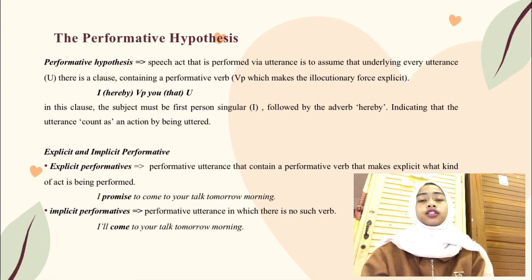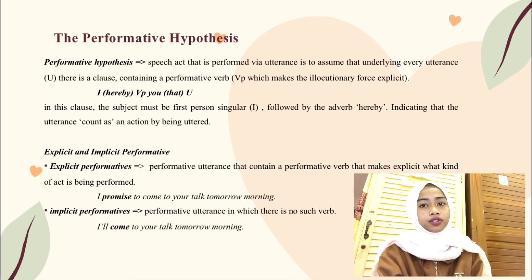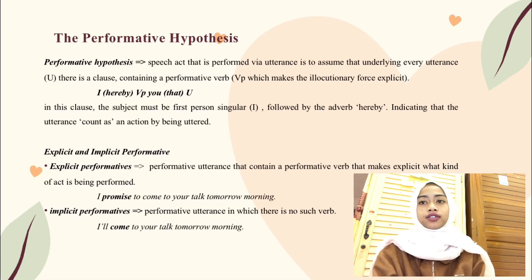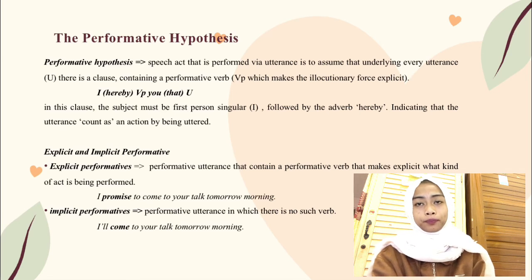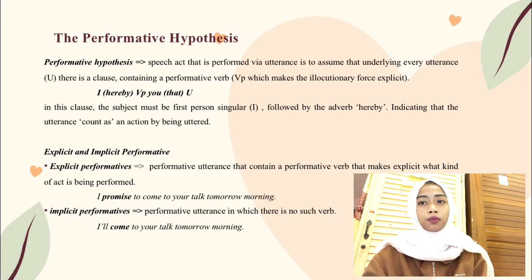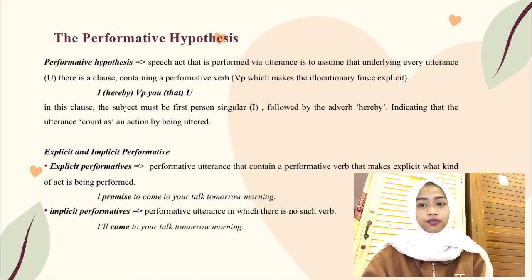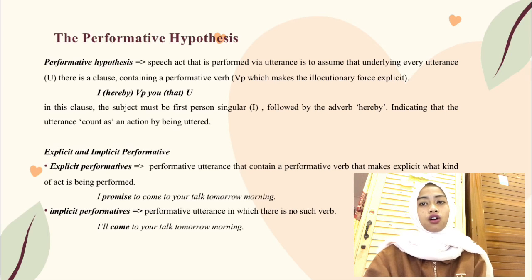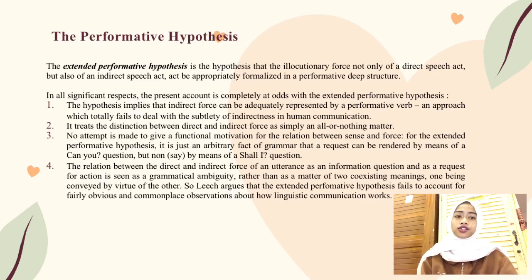The next material is explicit and implicit performative. Explicit performative is a performative utterance that contains a performative verb that makes explicit what kind of act is being performed. For example: 'I promise to come to your talk tomorrow morning.' Implicit performative is a performative utterance in which there is no such verb. For example: 'I'll come to your talk tomorrow morning.'